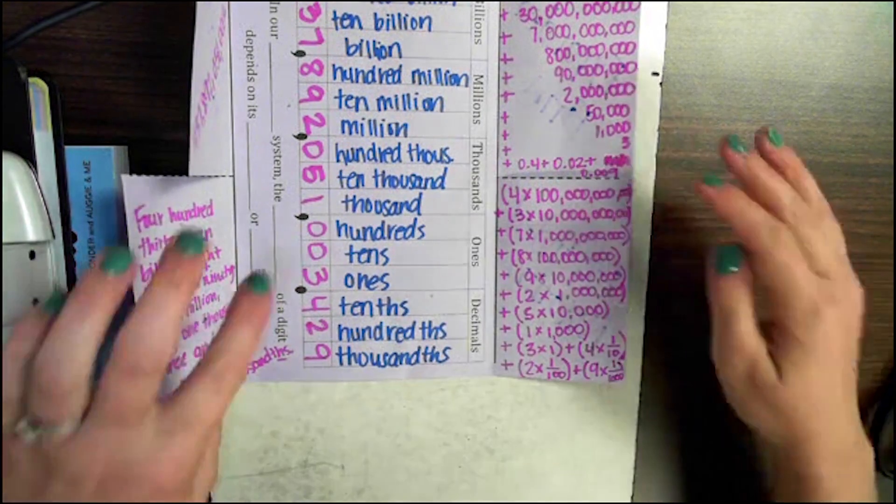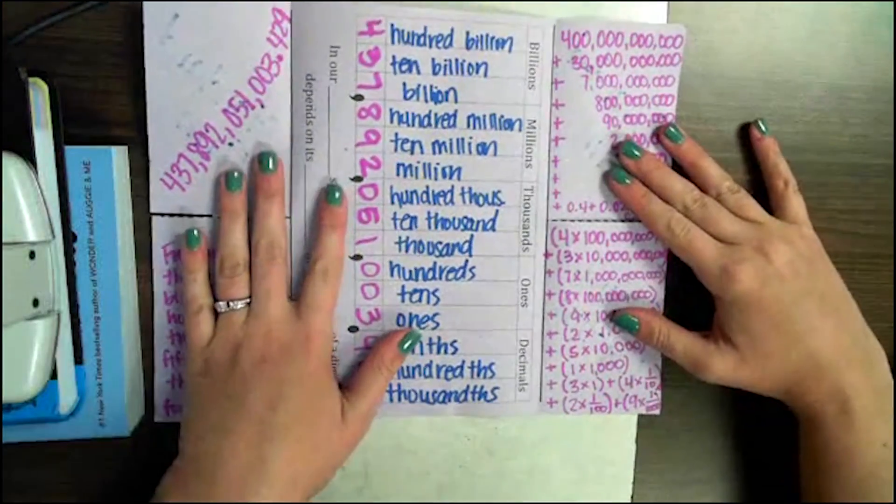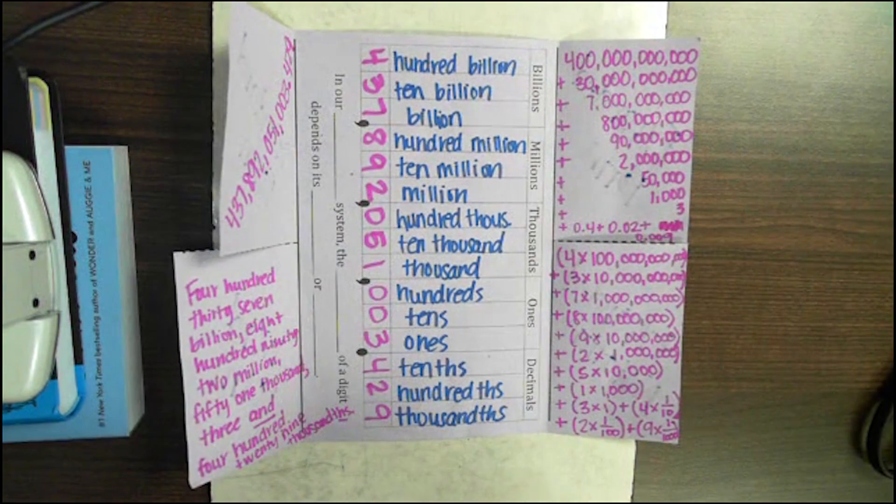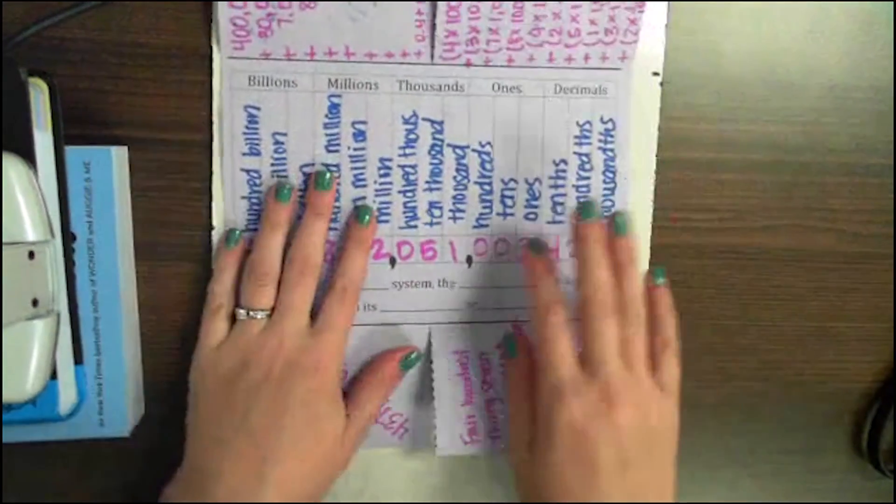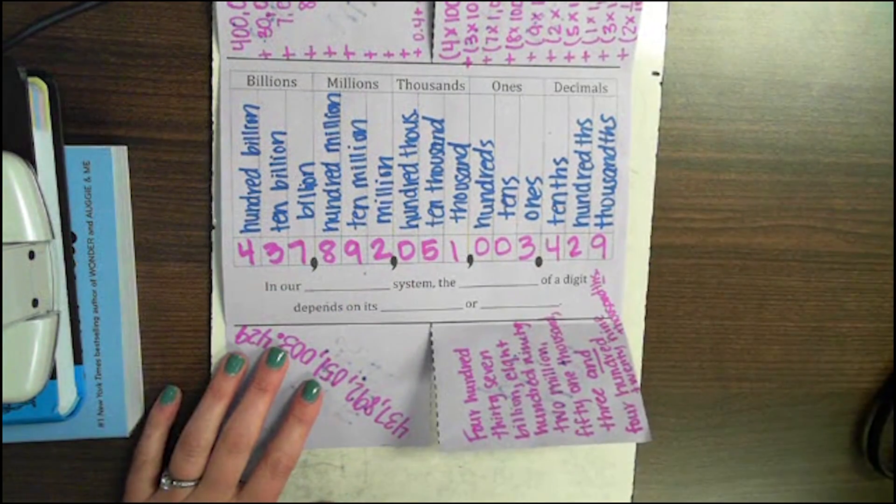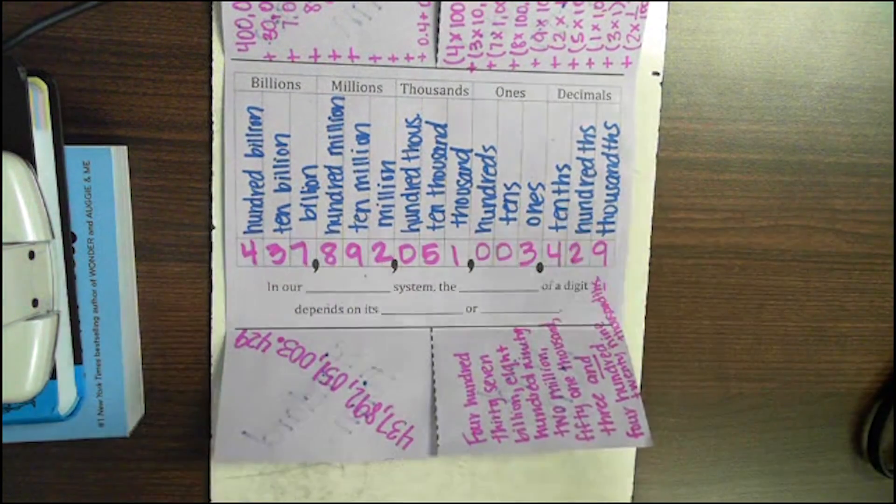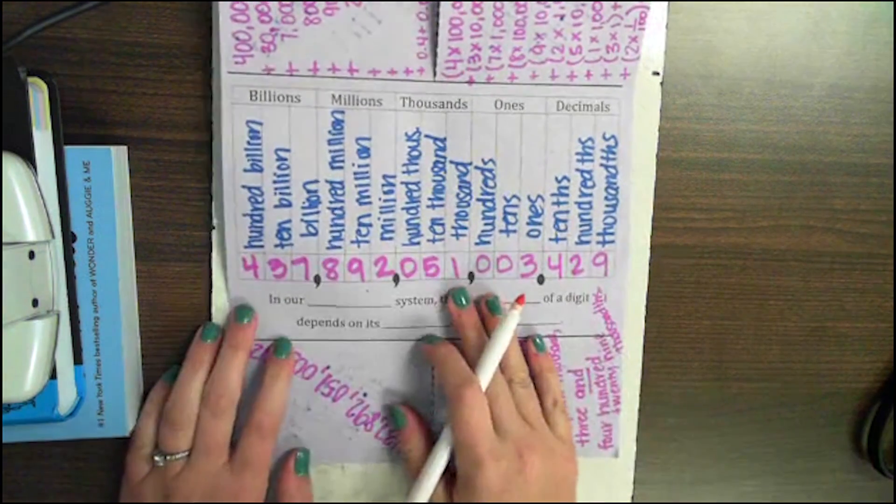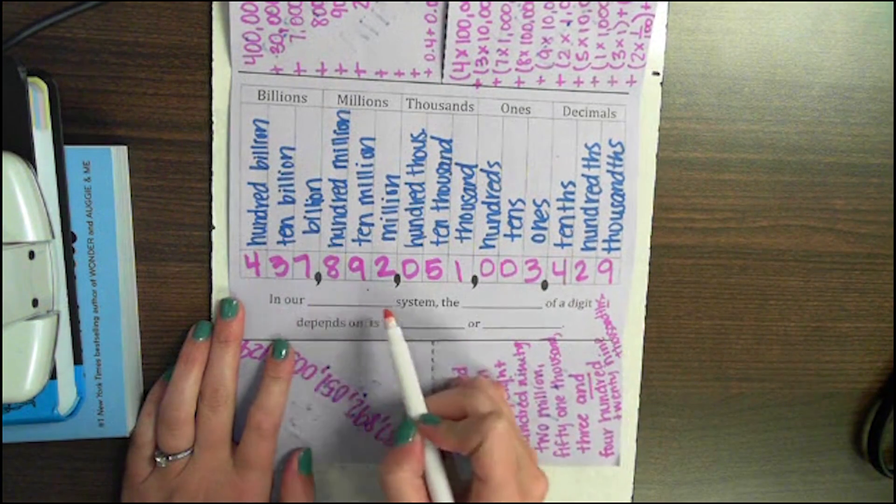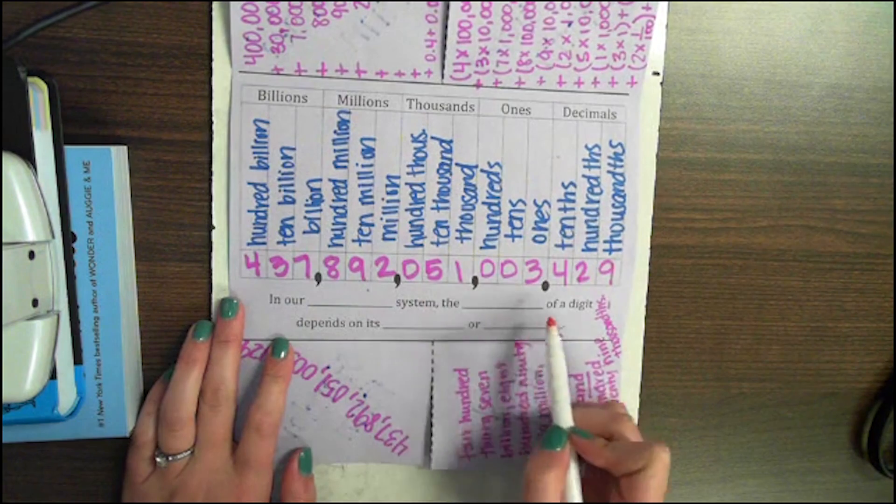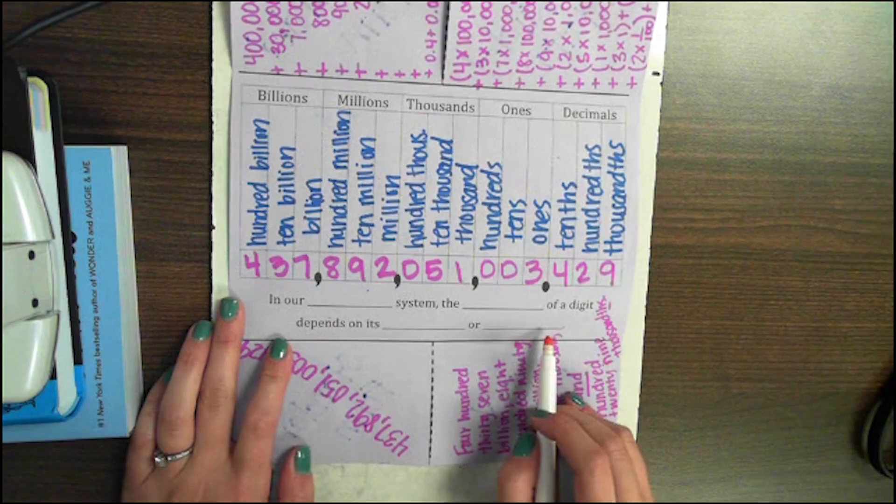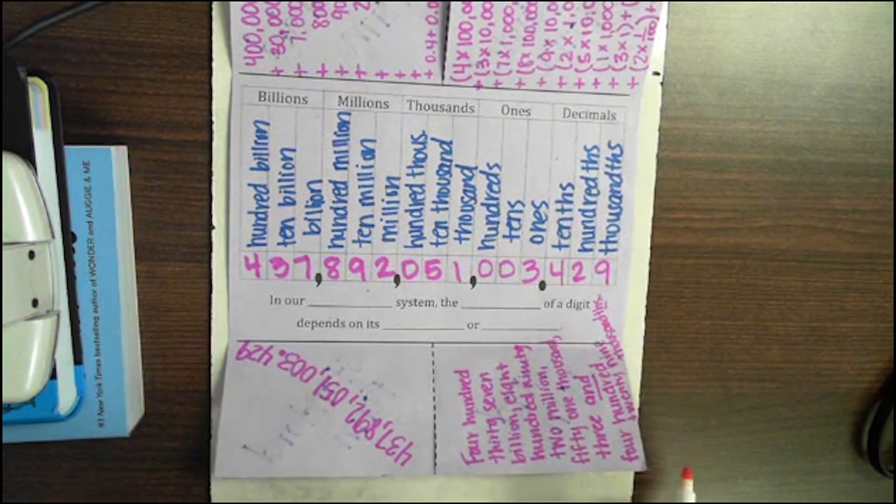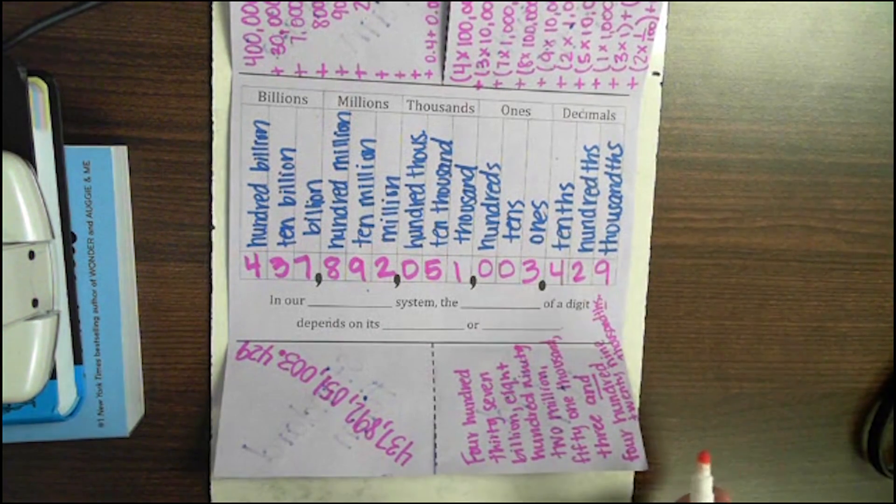Okay, so here's what your foldable should look like overall. Hopefully you have enough space. Let's go ahead and fill out the fill in the blanks here. This says in our blank system, the blank of a digit depends on its blank or blank. Go ahead and think about what you would put in those blanks for just a second.